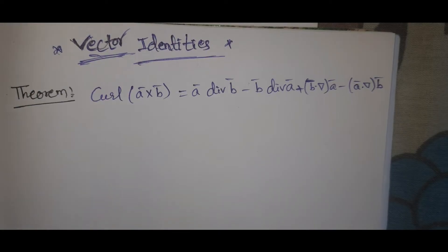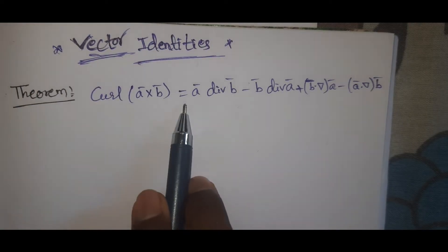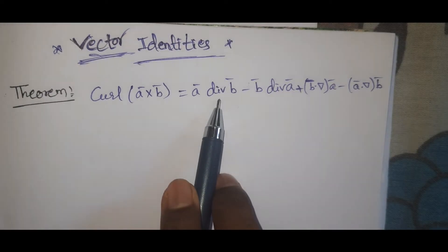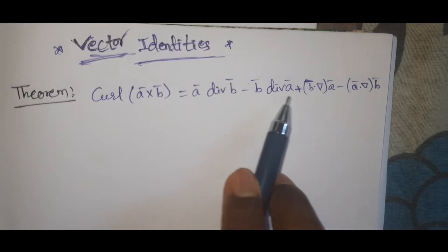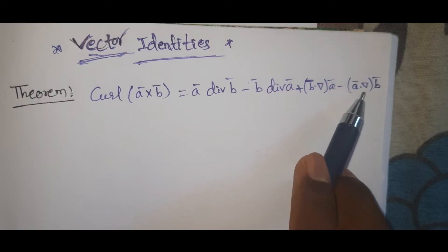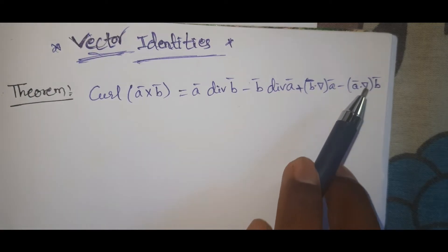Theorem 1: curl of (ā × b̄) equals ā divergence b̄ minus b̄ divergence ā plus b̄ dot ∇ā minus ā dot ∇b̄.